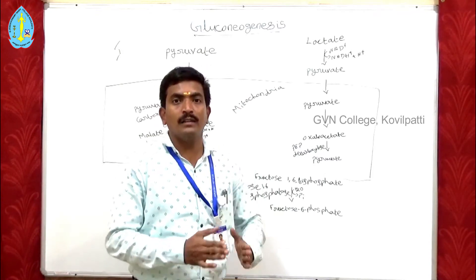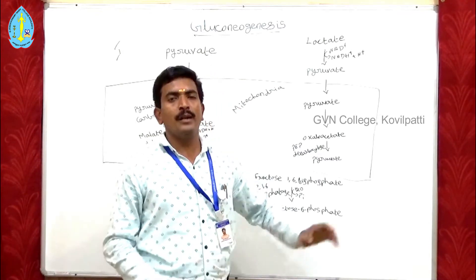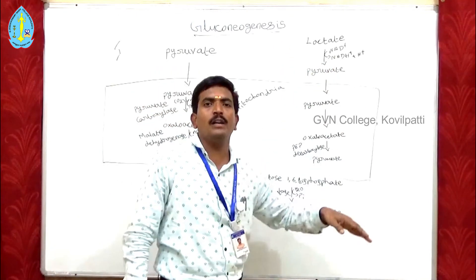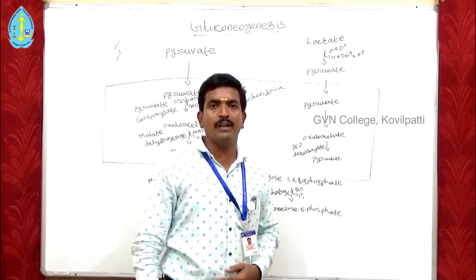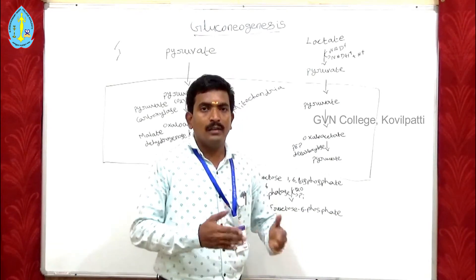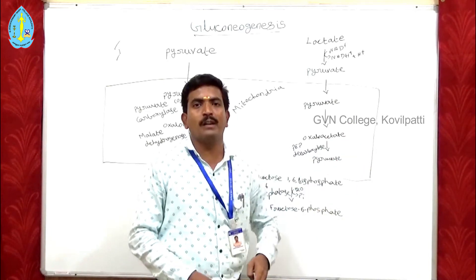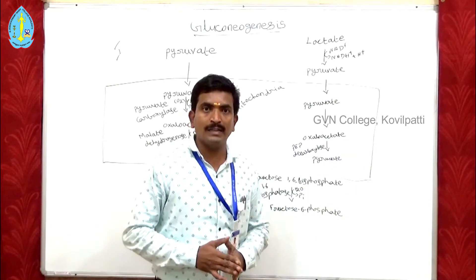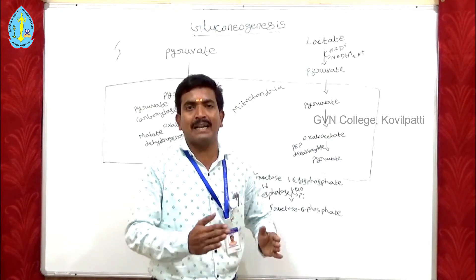Let's see what the irreversible processes are. The first one involves the pyruvate molecule: pyruvate is converted into phosphoenolpyruvate. Phosphoenolpyruvate involves a kinase — the pyruvate kinase reaction. The conversion of pyruvate into phosphoenolpyruvate is the first bypass reaction. Bypass reaction means these reactions are bypassed from the glycolysis pathway.